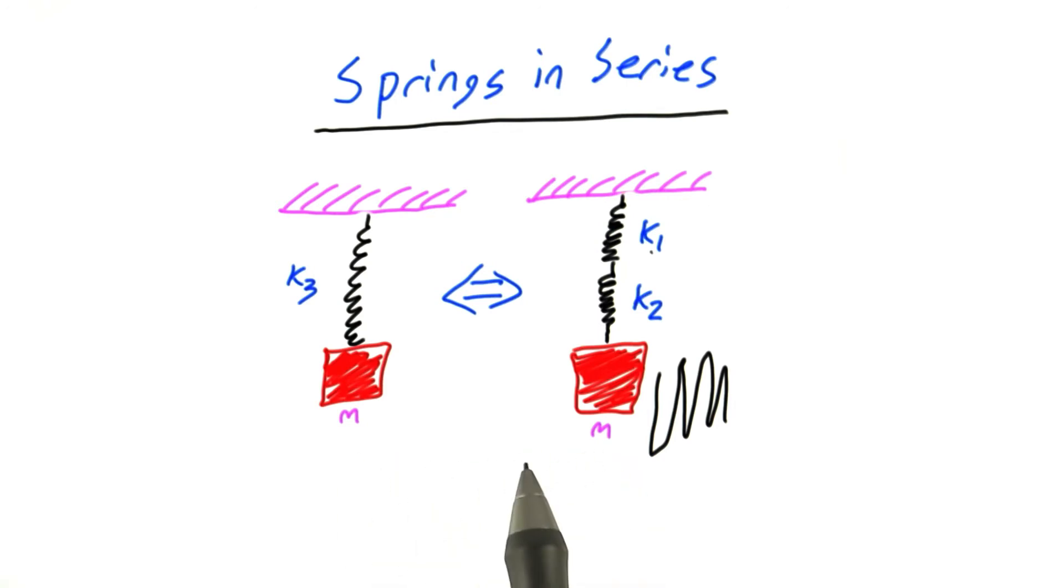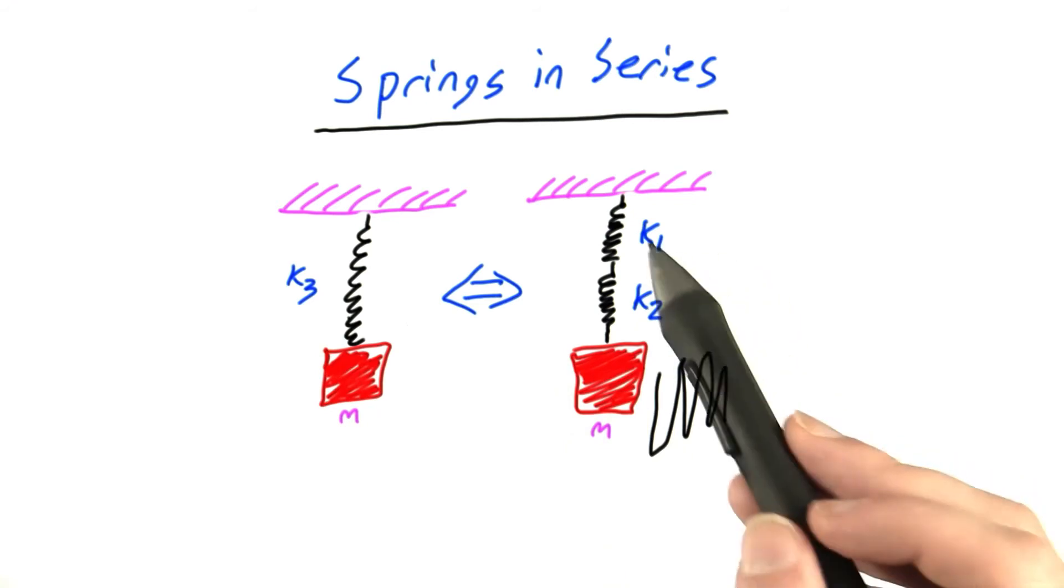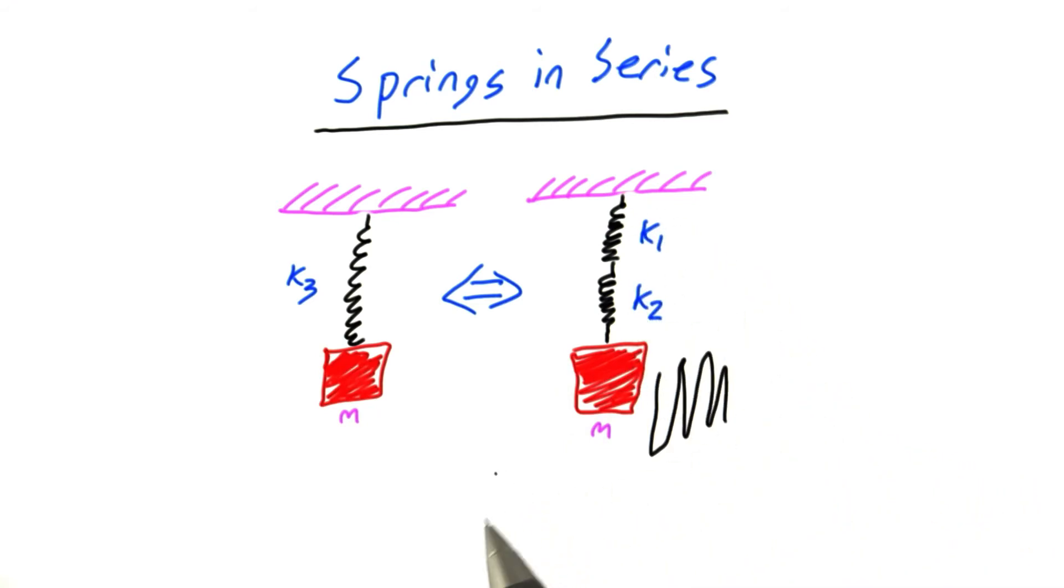So for these two scenarios to be exactly equivalent, there actually has to be a very special relationship between the spring constant k3 and the spring constants k1 and k2. And that's what I want you to solve for in this problem.